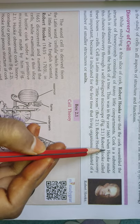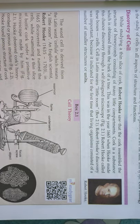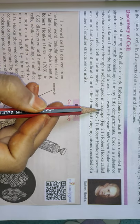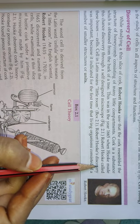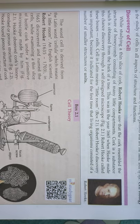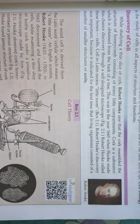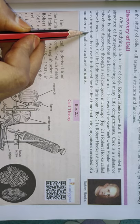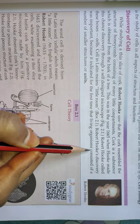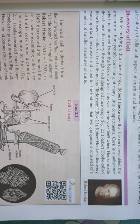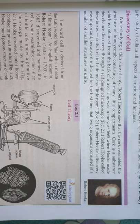This was in the year 1665 when Hooke made this chance discovery through a self-designed microscope — उन्होंने खुद microscope बनाया था. Robert Hooke called these boxes 'cells'. The word 'cells' comes from Latin, meaning 'little room', because the compartments resembled little rooms. Hooke's discovery was important because it indicated for the first time that living organisms consisted of smaller structures or units.